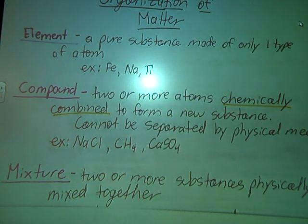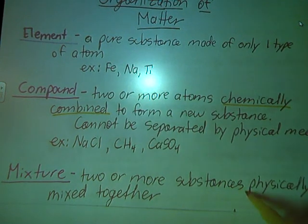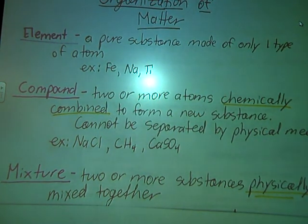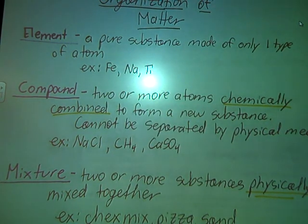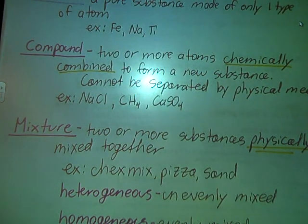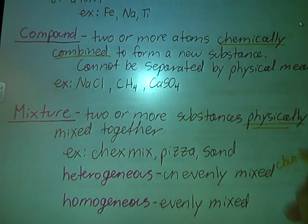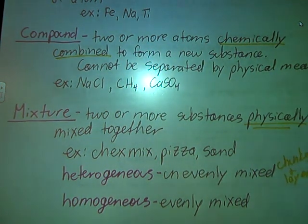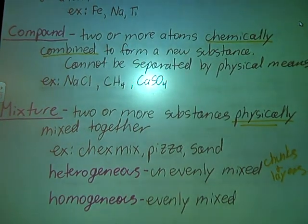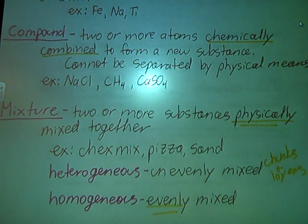On the flip side, I can mix substances physically, and this physical mixture of substances is called a mixture. We've got two different types: heterogeneous mixtures and homogeneous mixtures. So I can use physical means to separate these. A heterogeneous mixture is something that is unevenly mixed. Think chunks and layers. So Italian salad dressing, pizza, Chex mix are all heterogeneous mixtures because I can see all the bits and pieces. A homogeneous mixture is evenly distributed, evenly mixed throughout.